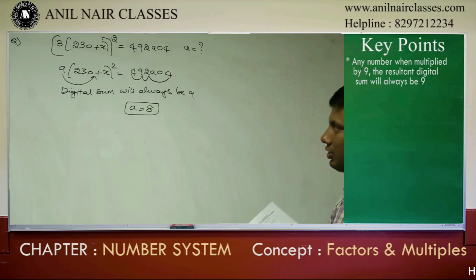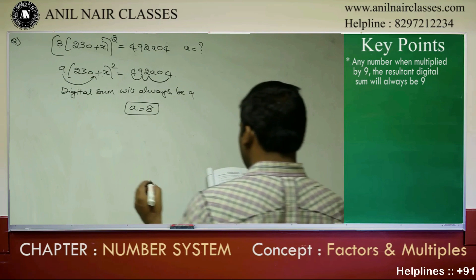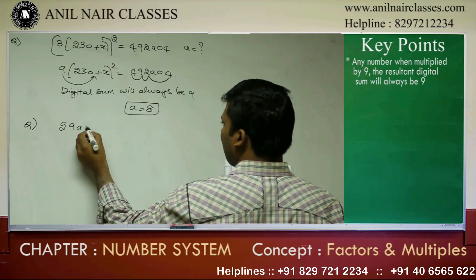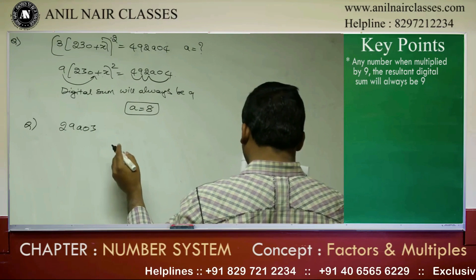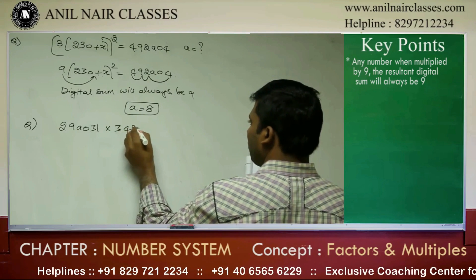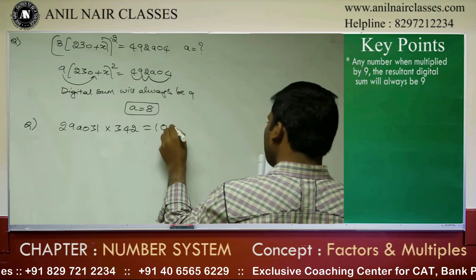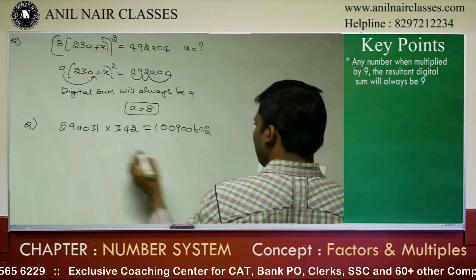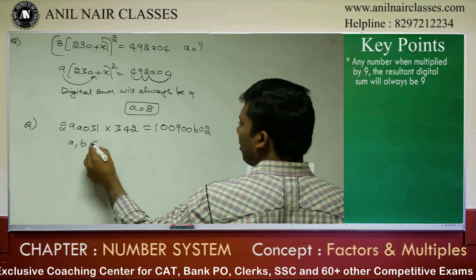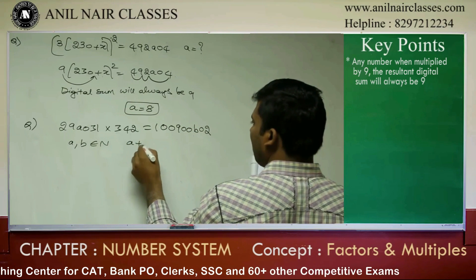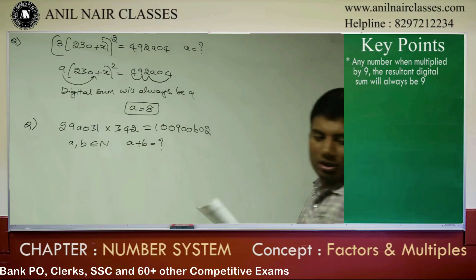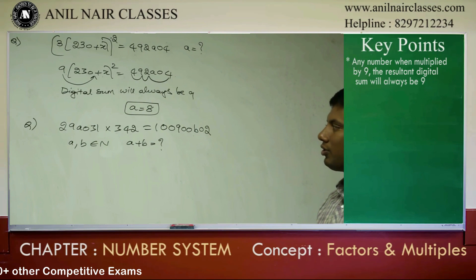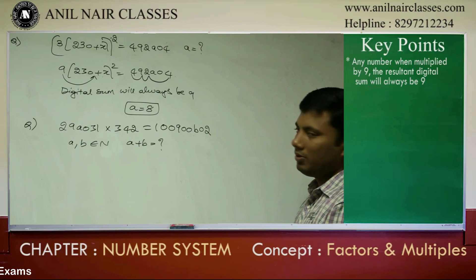Idea clear? Next. Second question. Find: 29A031 into 342 equals 100900B02. A and B are natural numbers. 29A031 into 342 equals 100900B02. Same concept.